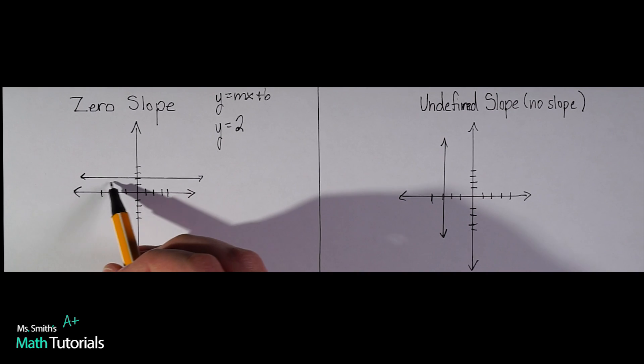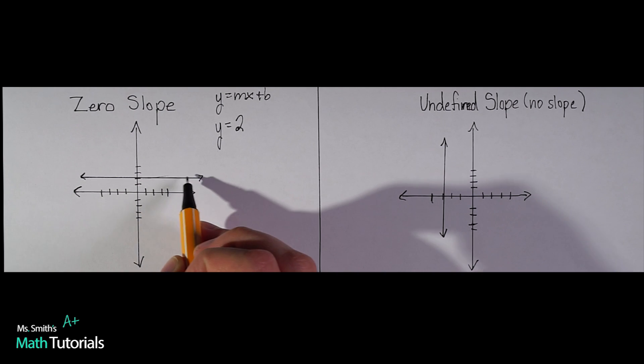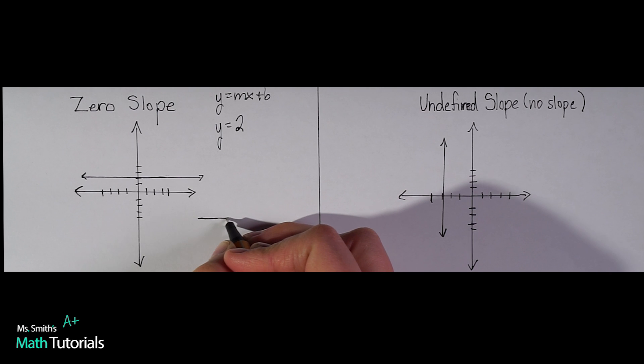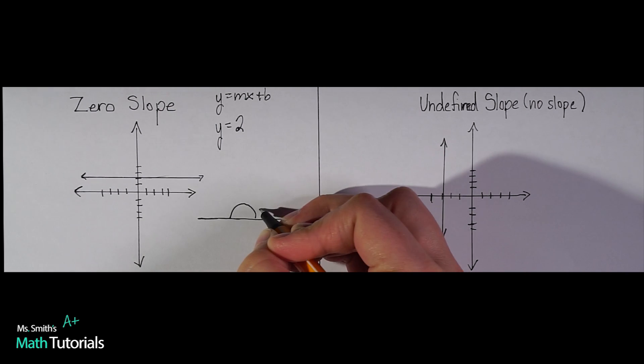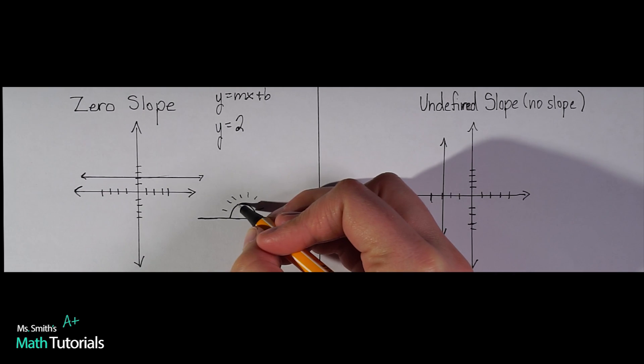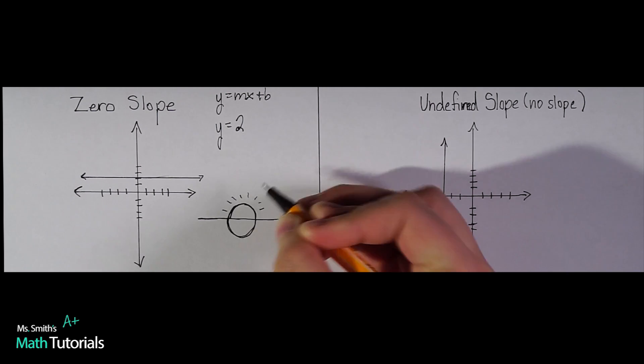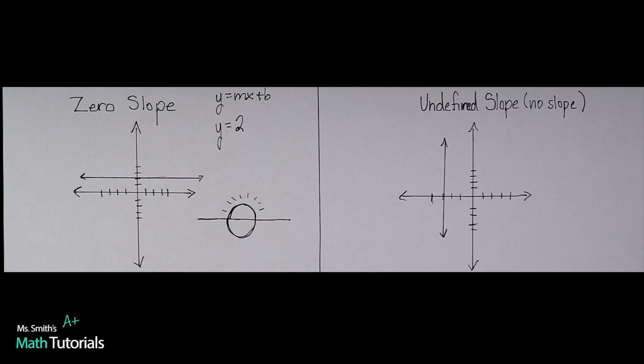I kind of like to think of it like this is a horizontal line, a zero slope. So I think of a horizon would have the sun coming up, right? On the horizon, the flat line. And I think of the sun being a zero. So if you've got a horizontal line, you know your slope is zero. Just a little easy trick to remember.